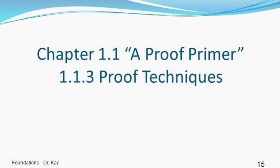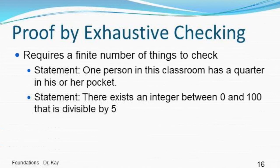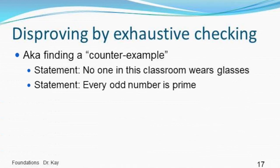So let's talk about a couple different proof techniques. Again, these are proof techniques that you should already know. So if you have a finite number of things to check, you can do proof by exhaustive checking. So if I'm teaching in a classroom and I make the statement, one person in this classroom has a quarter in his or her pocket, I can get everyone in my class to turn out their pockets and see if anybody has a quarter in it. If there's a quarter, then the statement is true. If there's no quarter, then the statement is false. Similarly, we can look at the statement, there exists an integer between 0 and 100 that's divisible by 5. Well, we could just start looking at all the integers between 0 and 100. I haven't been very specific here. I haven't said whether I'm including 0 and 100 or not, but let's start with 1. Nope, not divisible by 5. 2. Nope, not divisible by 5. But we get to 5 and we say, oh yeah, 5 is divisible by 5. So the statement is true.